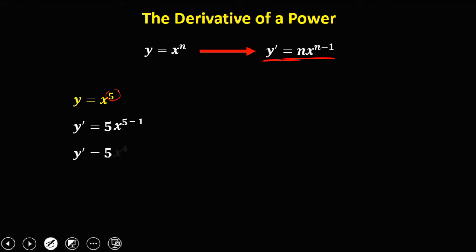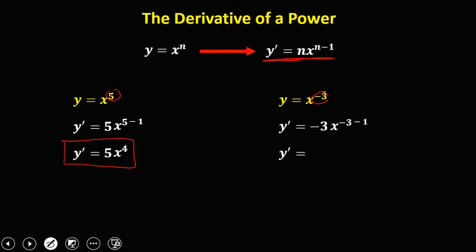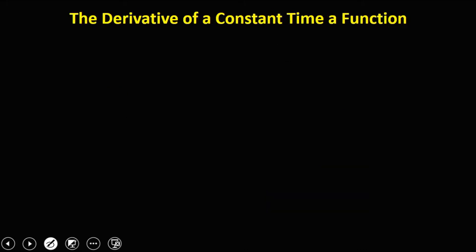The derivative of x to the power 5 is 5x to the power 4. For y equals x to the power negative 3, the negative 3 becomes the numerical coefficient, then minus 1 for the exponent, so y prime equals negative 3x to the power negative 4. Since the exponent is negative, bring it down: y prime equals negative 3 over x to the power 4.